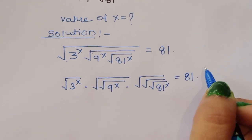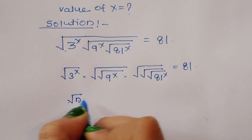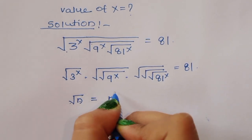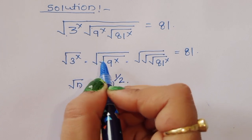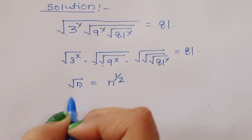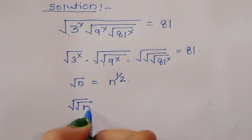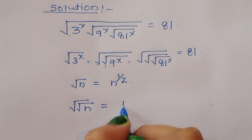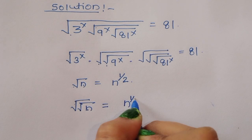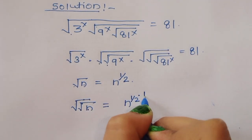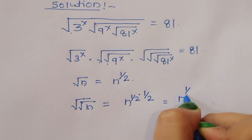Now we can say here we know the value of square root of n. If square root of n is equal to n power 1 by 2, then square root of square root of n is equal to n power 1 by 2 times 1 by 2, which equals n power 1 by 4.